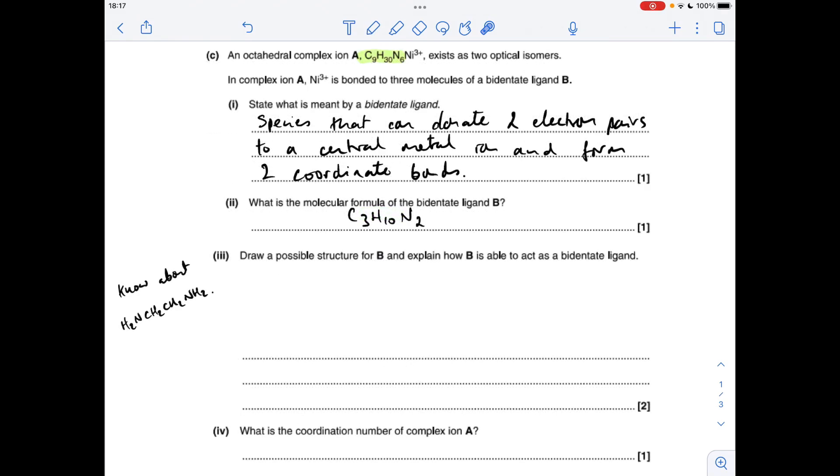Next part, we've got to come up with this possible structure for B, and explain how it's able to act as a bidentate ligand. You'll notice I've already drawn this up here, so I imagine most people already know about ethane-1,2-diamine. That's one of the examples I always give for a bidentate ligand. The only difference between the atoms or the molecular formula of that, and that, is a carbon and two hydrogens. So it's going to have that structure there, and why is it able to act as a bidentate ligand? Well, on each nitrogen, there's a lone pair of electrons, and it can obviously donate those to the central transition metal ion.